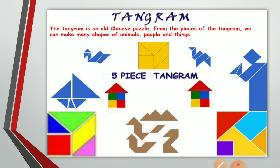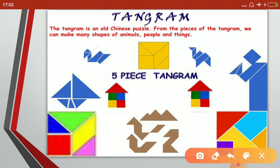Now you can see some shapes made with the five-piece tangram. See the shapes of birds, house, boat, man, etc. All these shapes are made with five pieces of geometrical shapes — that is, the five-piece tangram.